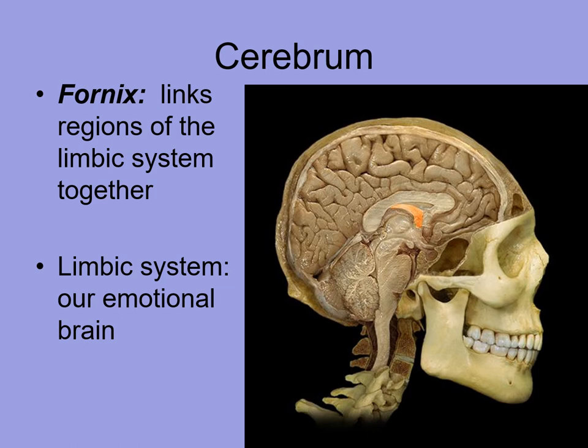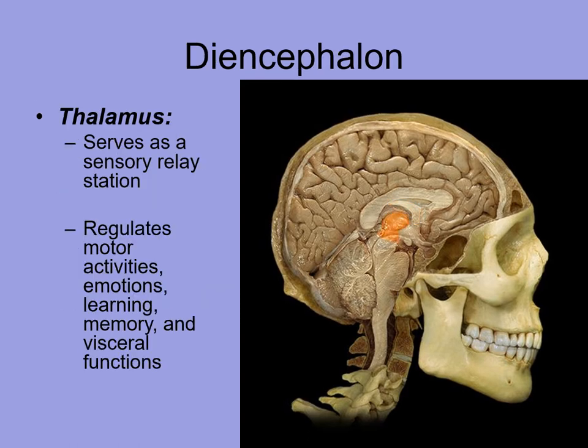The fornix links different regions of the limbic system together, highlighted here in orange. The limbic system controls a lot of our emotions. In your lecture, we'll talk about how different nerves pass through the limbic system and then give emotional connotations to things.